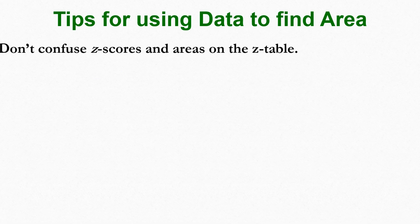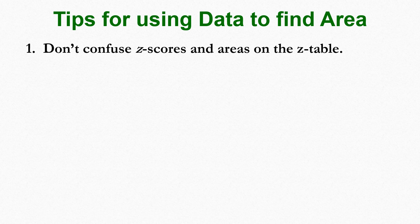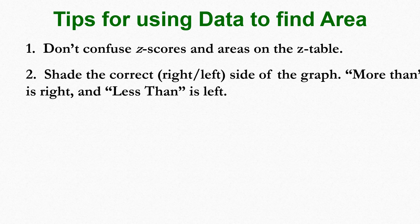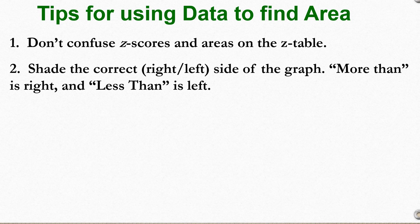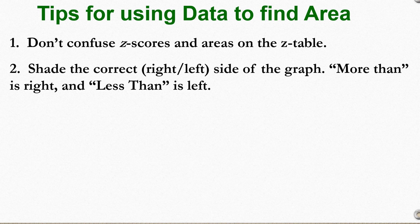Here are some tips to avoid errors. First, don't confuse the z-scores and the areas on the z-table. The z-scores are generally given as two decimal places, and the areas are generally given as four decimal places, so that might help you to distinguish between the two. Second, shade the correct side of the data value. For example, if the problem says more than, you're going to shade to the right, and if it says less than, you're going to shade to the left. Three, z-scores are going to be negative when they're located to the left of the mean.